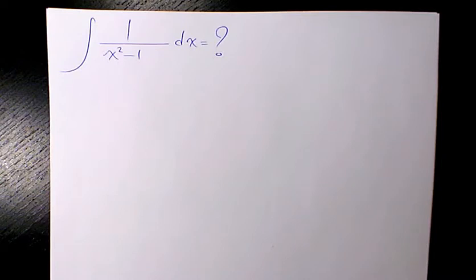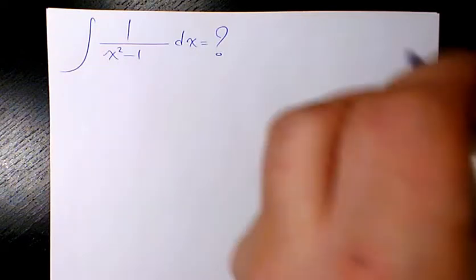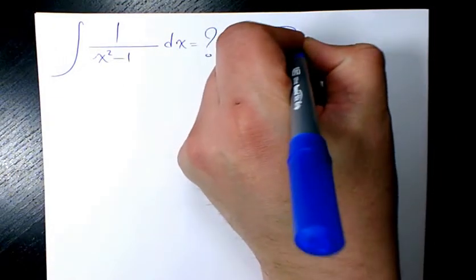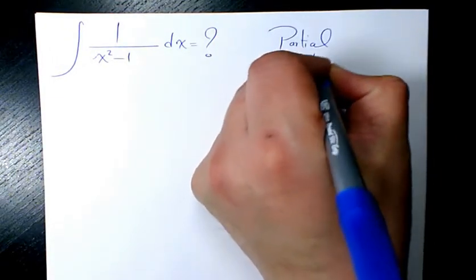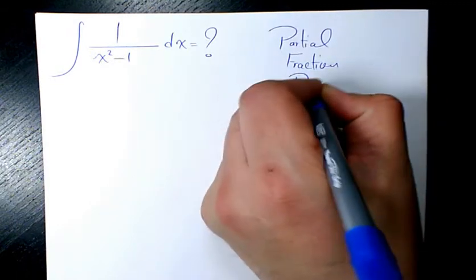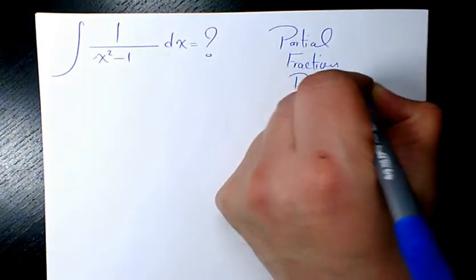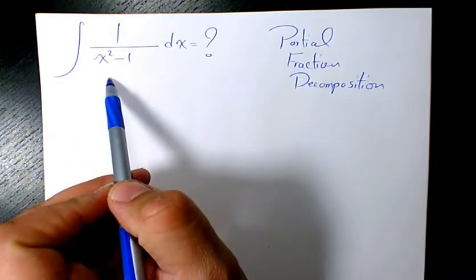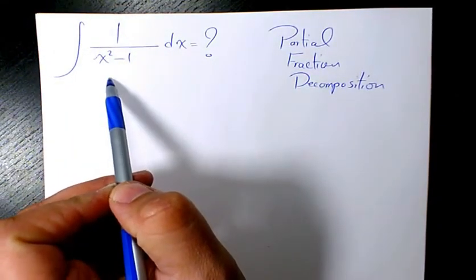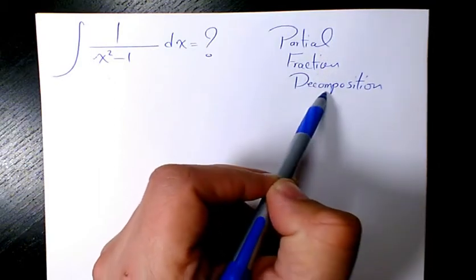In this example, I want to use partial fraction decomposition. Usually, whenever the degree of the numerator is less than the degree of the denominator, we need to use partial fraction decomposition.